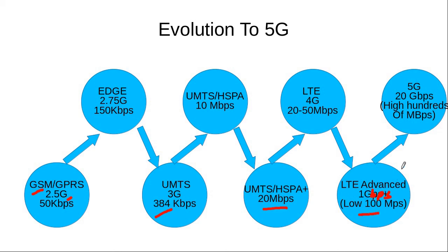Then 5G comes, and in 5G the target peak data rate is 20 Gbps. But in a realistic scenario, the data rate experienced by the user is in the high hundreds of megabits per second.